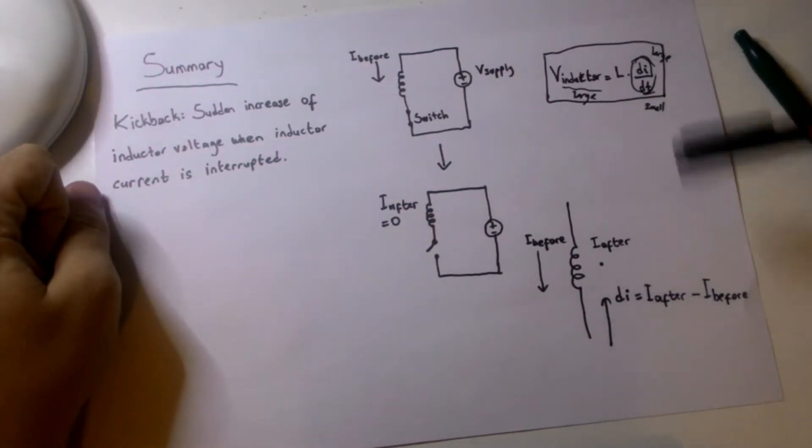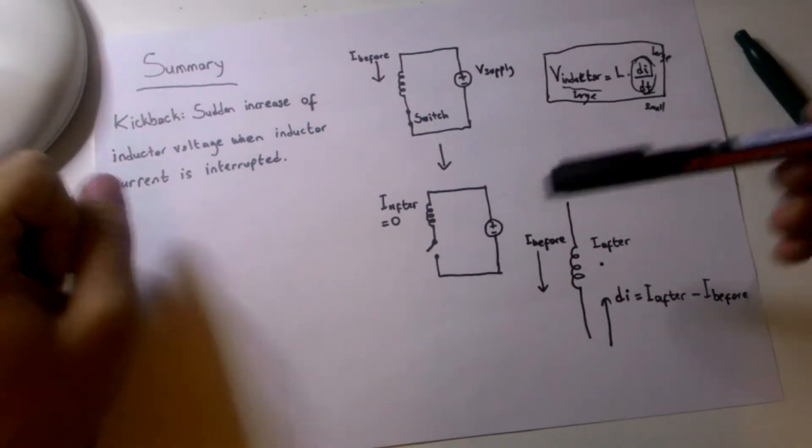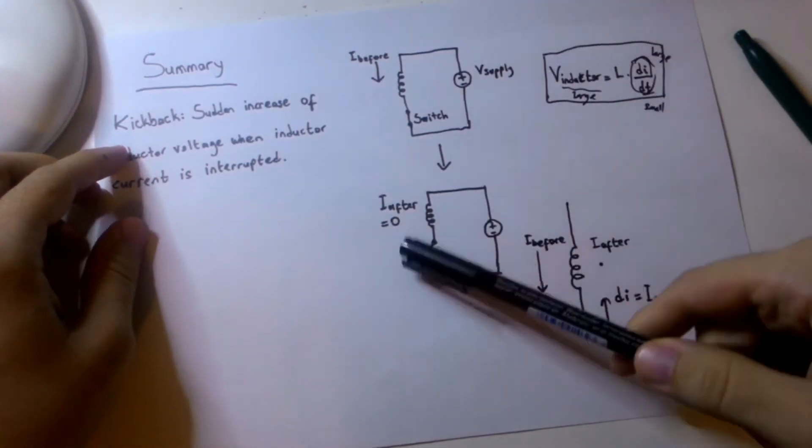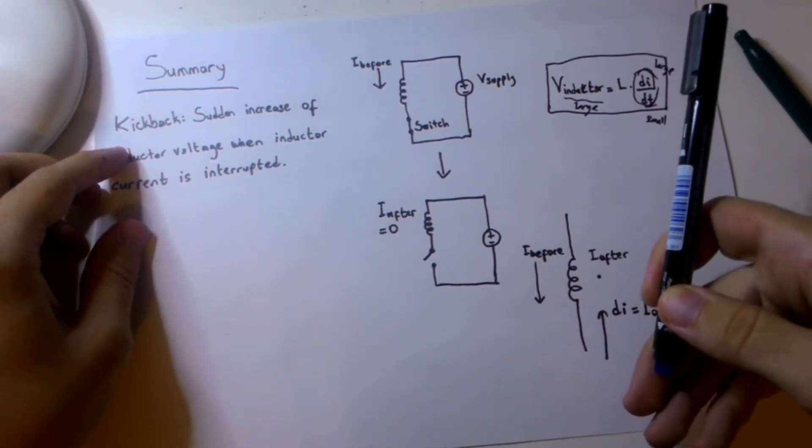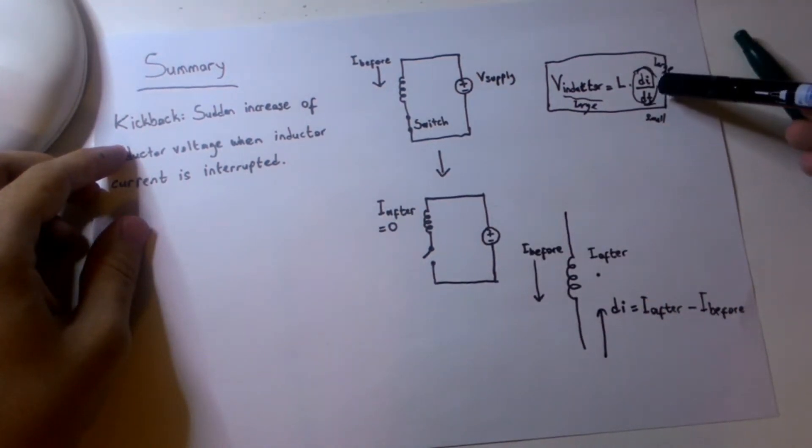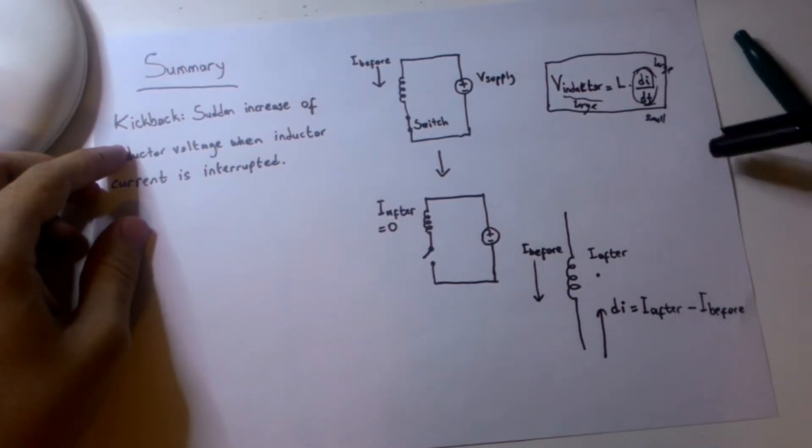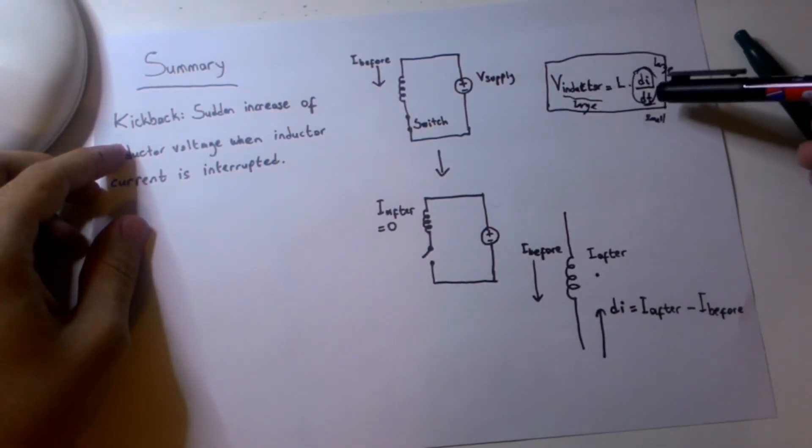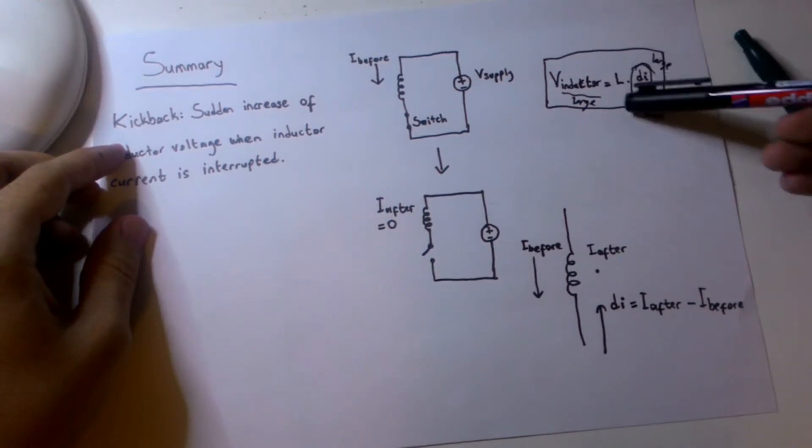There's going to be a large voltage induced because the current is going to change in a very short time. Since this is a mechanical contact and I'm just opening it, the current will suddenly drop to zero, so this dt term is going to be very small and due to this, this term overall is going to be very large, so the induced voltage is going to be very large.